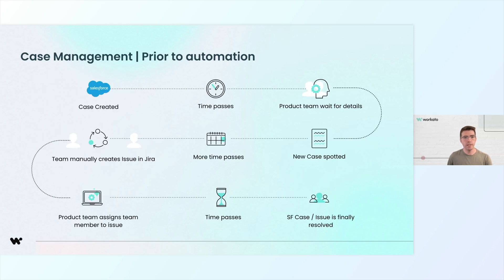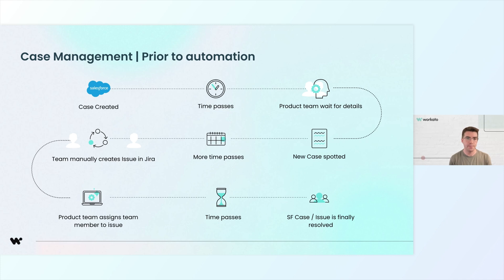Let's take a look at a typical case management workflow — specifically a process where cases from Salesforce need to be transferred to Jira for the product team. Prior to automation, here's how that process would typically play out. First, a case is created in Salesforce and time passes while the product team waits for details. Then manually, the team will create an issue in Jira. More time passes before the product team spots the case and assigns a team member to resolve it, and only after several delays is the case actually resolved.